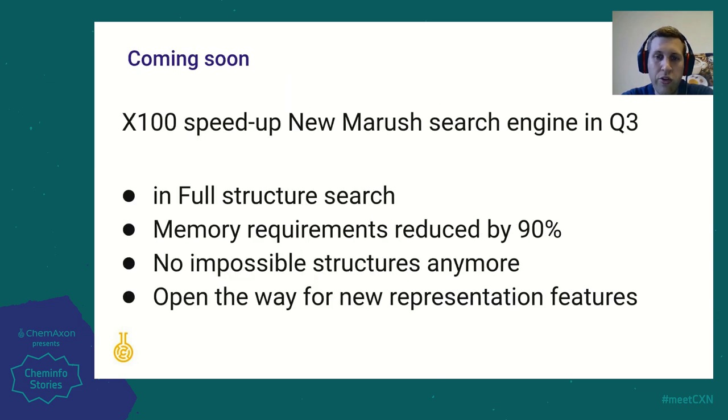According to measurements, the new engine offers 100 times speed-up on complex patent Markush structures in the most important full-structure use case with 90% reduced memory usage. Some very complex structures were impossible to search with the old engine, but the new implementation solved these challenges and we completely eliminated the problem of occasional combinatorial explosion.